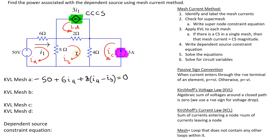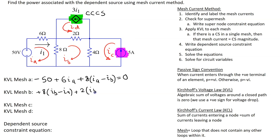Moving on to mesh B, starting at the 8-ohm resistor: the term is +8(IB − IA), since there are two mesh currents in opposite directions and we give priority to IB. Through the 2-ohm resistor, IB and ID are flowing in the same direction, giving +2(IB + ID). Through the 4-ohm resistor, IB and IC are also flowing in the same direction, giving +4(IB + IC) = 0.